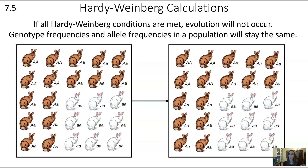One of the Hardy-Weinberg equilibrium requirements is a large population. In some calculation problems, we're going to kind of ignore that and deal with a small population just to make our numbers easier for those calculations, but realize that one of the requirements of Hardy-Weinberg is having a large population.